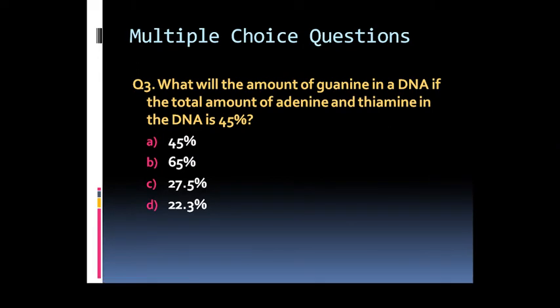Question 3: What will be the amount of guanine in DNA if total amount of adenine and thiamine in DNA is 45%? Option A: 45%. Option B: 65%. Option C: 27.5%. Or Option D: 22.3%.